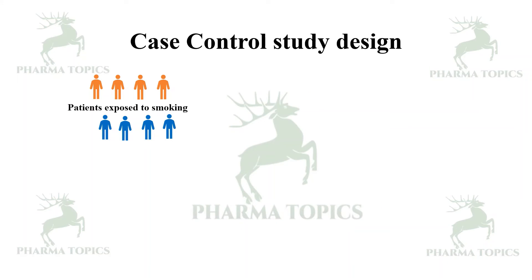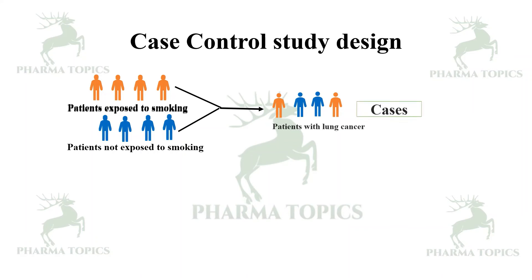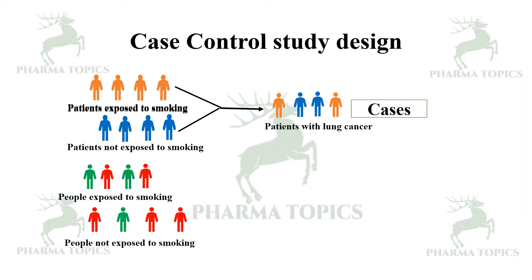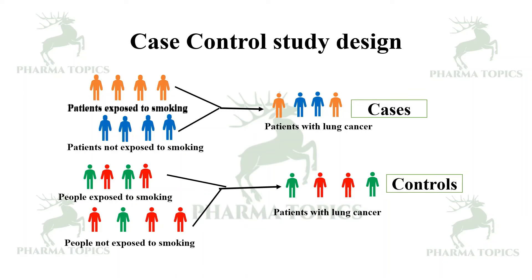Next is the case control study design. Consider patients exposed to smoking and patients not exposed to smoking. They are divided into patients with lung cancer — called cases — and people with and without smoking exposure are taken and segregated into patients with lung cancer who act as controls. There are cases and controls — that is why it is called a case control study.